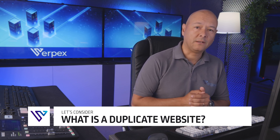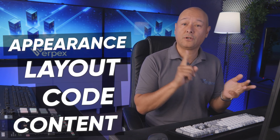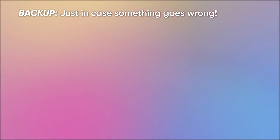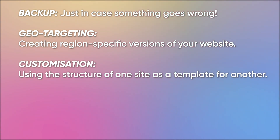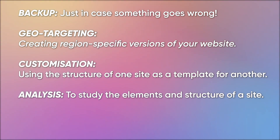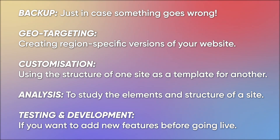First, what is a duplicate website? A duplicate website is essentially a copy of an existing site, including its appearance, layout, underlying code, and content. Developers often duplicate websites for legitimate reasons: to keep a backup in case something goes wrong, for geo-targeting to create region-specific versions, for customization using the structure of one site as a template for another, for analysis to study elements and structure, and for testing and development before going live.